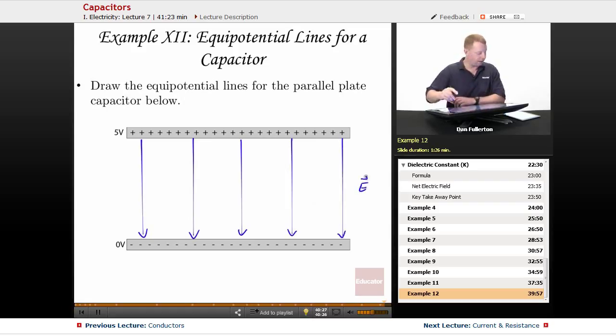If those are our electric field lines and we know equipotentials always cross at right angles, then we can draw our equipotential lines something like this.